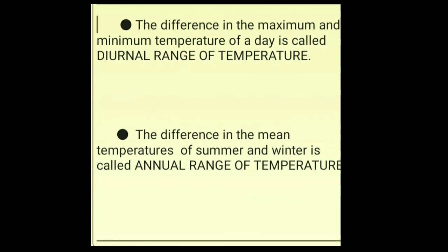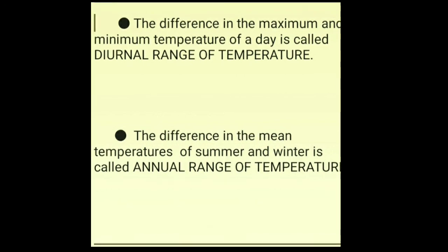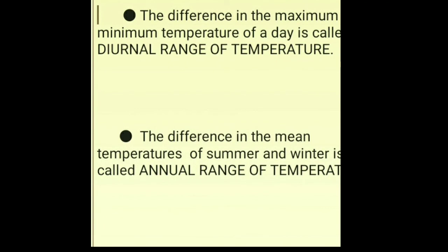Then what is annual range of temperature? The difference in the mean temperature of summer and winter of a particular place is called the annual range of temperature. For example, if the average summer temperature of a particular area is 38 degrees and the winter temperature is 18 degrees, the difference between the mean summer temperature and mean winter temperature — that is 38 minus 18 equals 20 — is called the annual range of temperature.